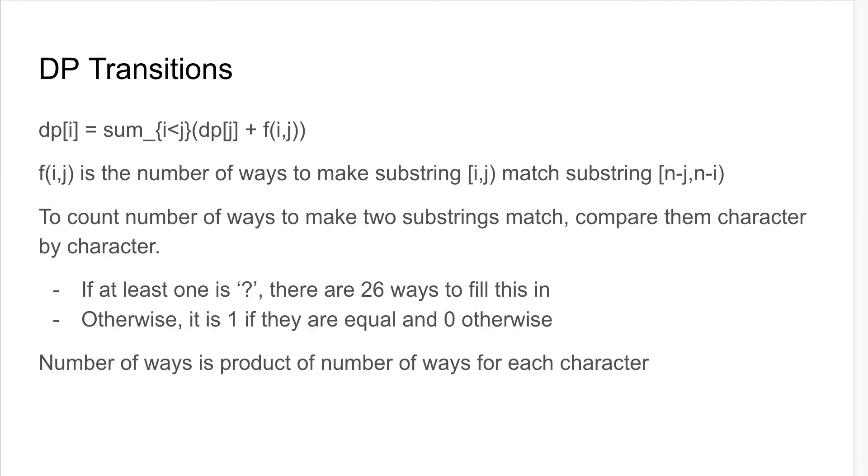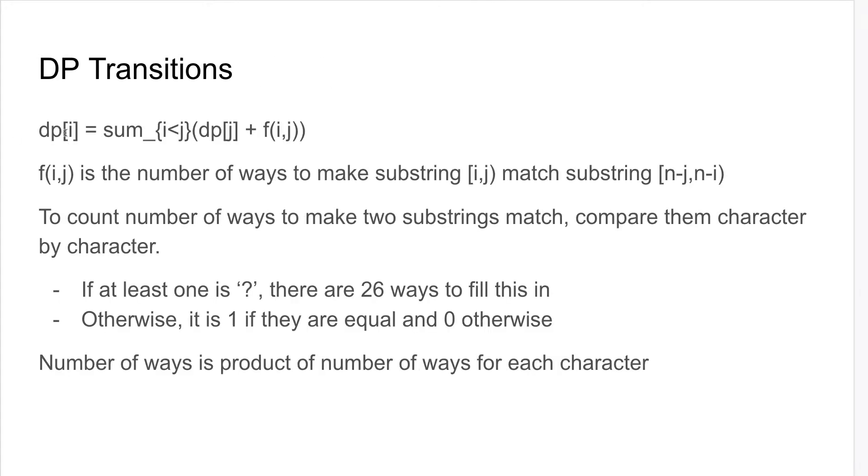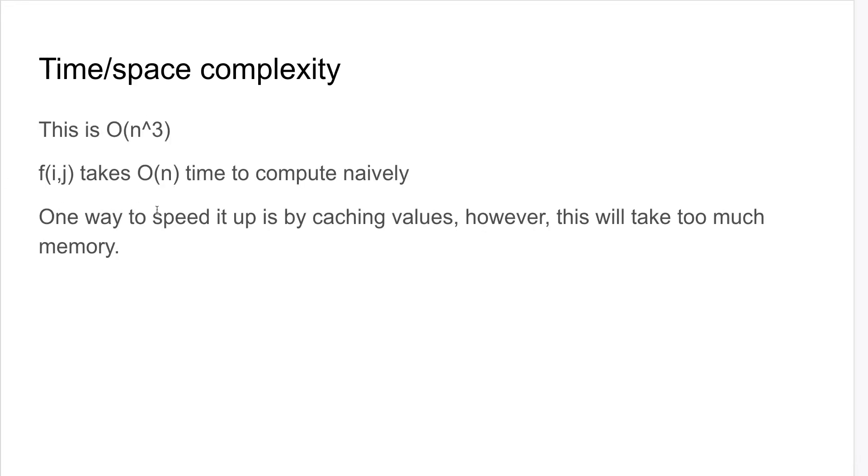This naively is O(n³) because there's n states, each state looks at n substates in its transition, and each substate takes O(n) time to compute because f(i,j) takes O(n) time naively to compute.